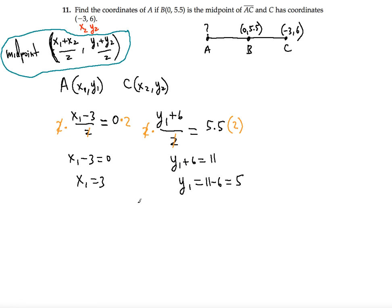So the coordinates of A are 3, 5. There you go.